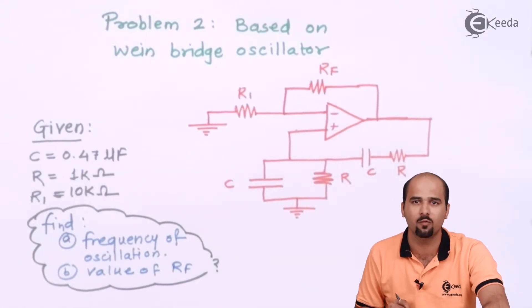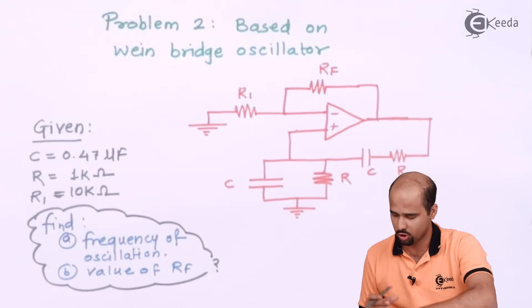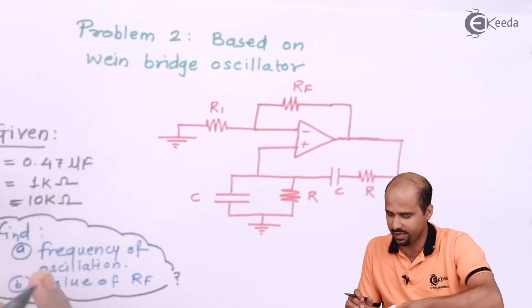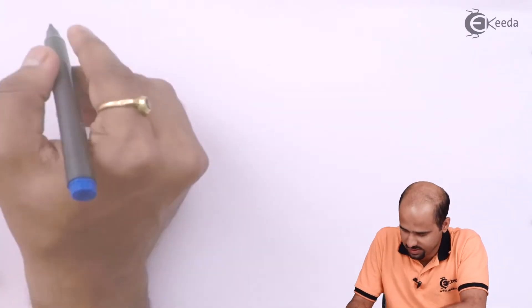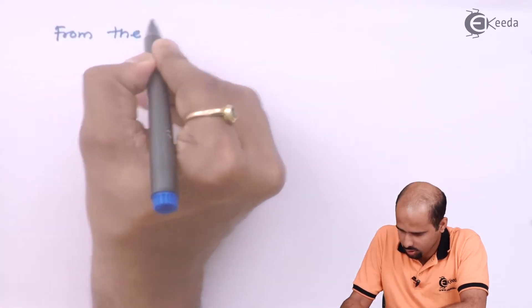So here we have to know what should be the gain formula for inverting and non-inverting amplifier. So let's move, first of all we will find out the value of the frequency of oscillation.